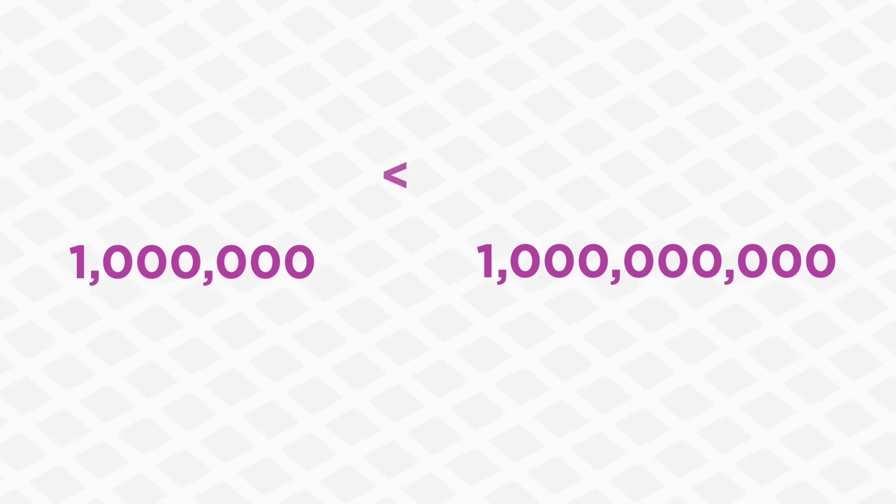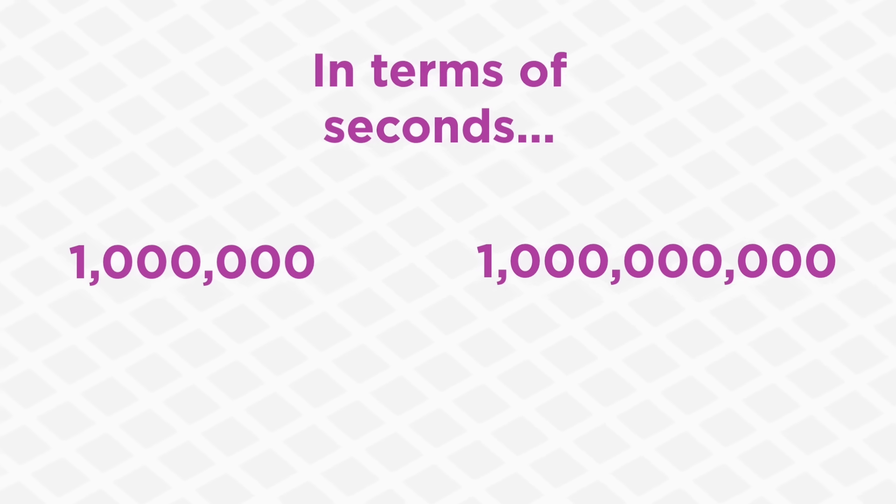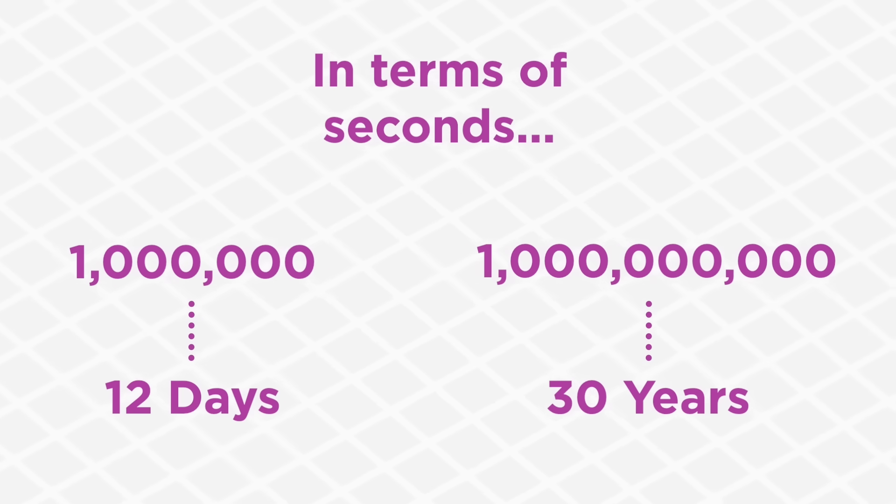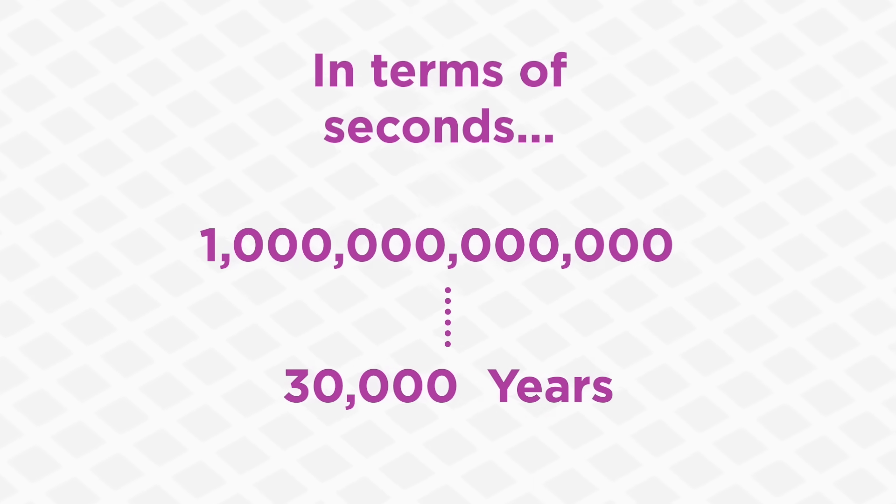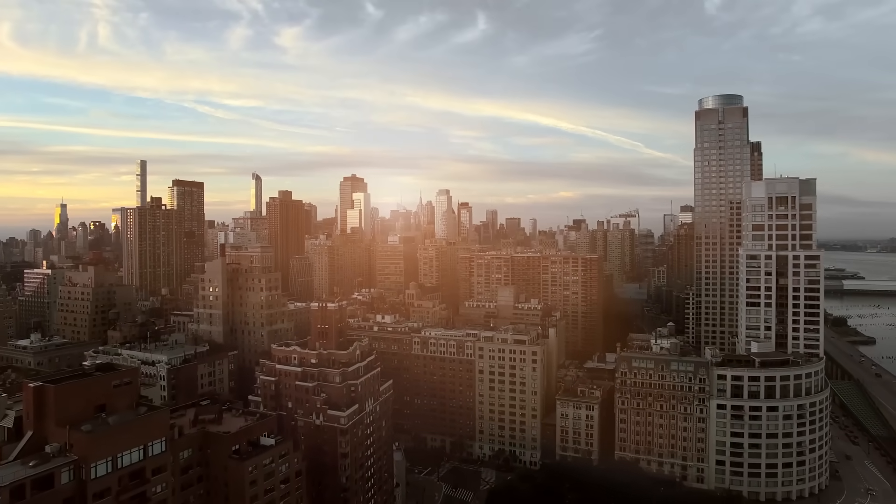If you take both numbers in terms of seconds, you would discover that 1 million seconds is approximately the same as 12 days. That maybe seems like a decently long time until you switch over to 1 billion seconds and discover that's the same as 30 entire years worth of time. And comparing 1 trillion seconds makes even 1 billion look like a puny number, because 1 trillion seconds is almost the same as 30,000 years.